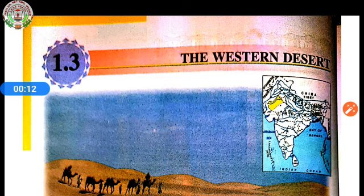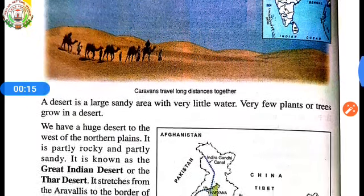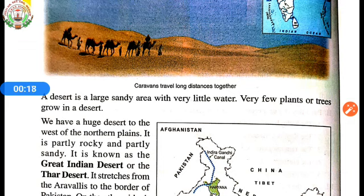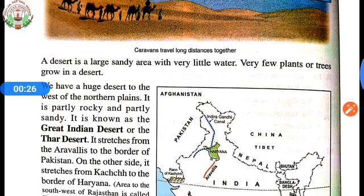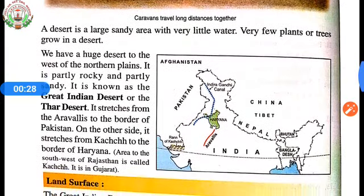In the previous class we studied that we have a huge desert to the west of the northern plain called the Great Indian Desert or Thar Desert. It stretches from Aravalli to the border of Pakistan and from Rann of Kutch to the border of Haryana. Rann of Kutch is on the northern side of Gujarat. It forms a natural boundary between India and Pakistan and is the world's 17th largest desert.